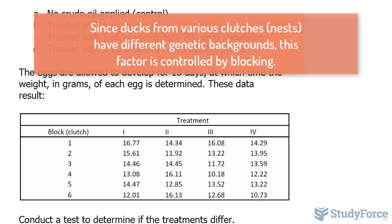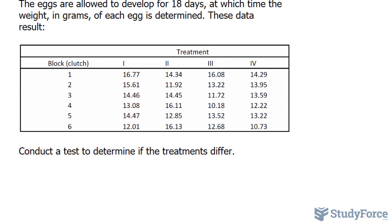Now, it's important to mention that for each nest, you would have genetic variability, so the offspring are not the same genetically speaking. We are expected to conduct a study to determine if the treatments differ. As you can see, this is a two-way ANOVA with one observation per block.